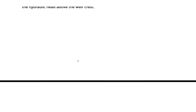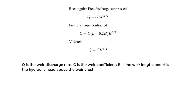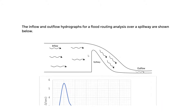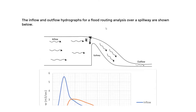To clarify what we mean by H: it is the hydraulic head above the weir crest — this measurement is our capital H. Based on that, let's do a quick example. The inflow and outflow hydrographs for flood routing analysis over a spillway are shown.